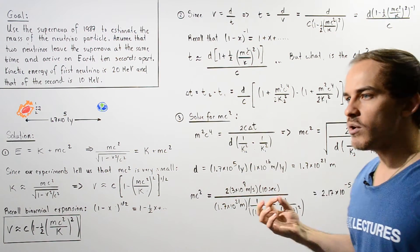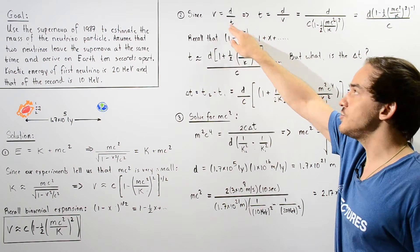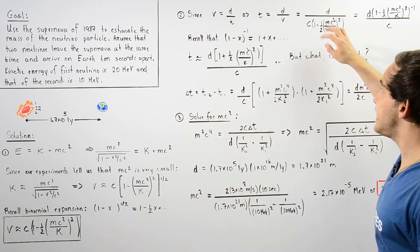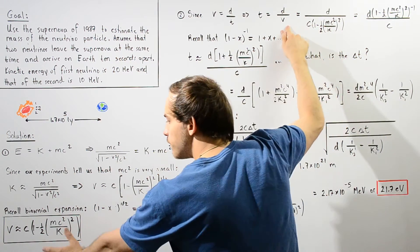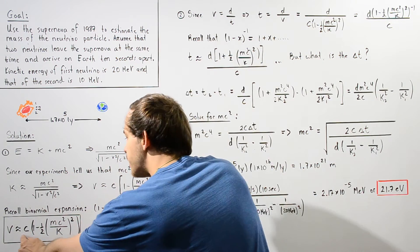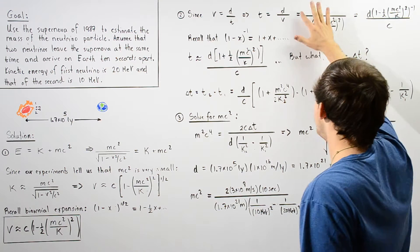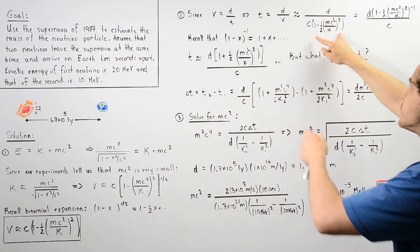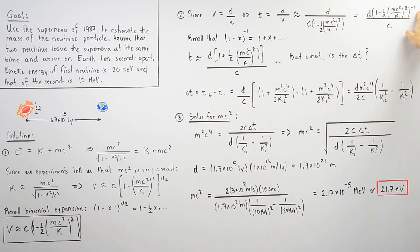Moving on to step 2, we want to calculate the time. Recall that velocity equals distance divided by time, so the time it takes a neutrino to travel is equal to the distance d divided by the velocity. We substitute our velocity expression into this equation and, since this is an approximation, the time is approximately equal to d over v.